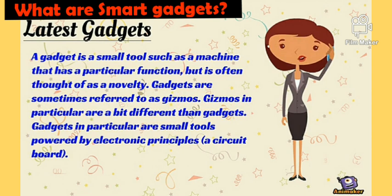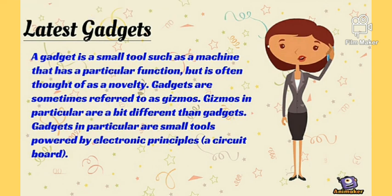So what are smart gadgets? Basically, a smart gadget is usually a small electronic device. A gadget is a small tool, such as a machine, that has a particular function but is often thought of as a novelty. Gadgets are sometimes referred to as gizmos. Gadgets in particular are small tools powered by electronic principles and a circuit board.